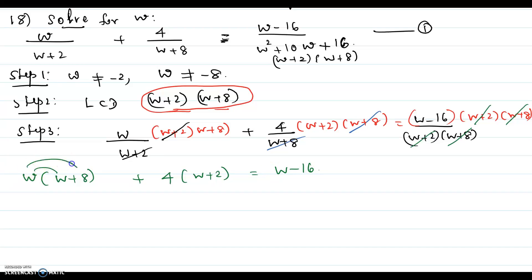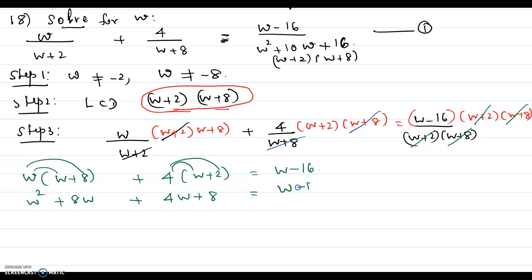Now you distribute to get w squared plus 8w plus 4w plus 8 equals w minus 16. So you get w squared plus — combining the like terms — 12w plus 8 equals w minus 16.